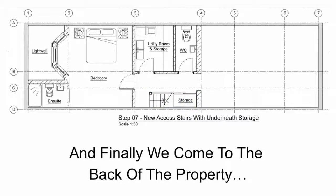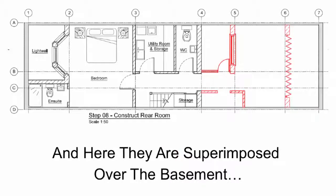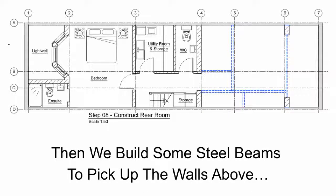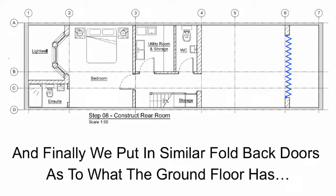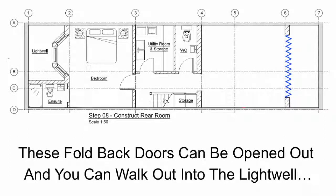Finally we come to the back of the property and here we can see what we need to support from the ground floor above, superimposed over the basement. So in step 8 we firstly build the end walls in a similar way to the ground floor, then build some steel beams to pick up the walls above, and finally put in similar folding doors to what the ground floor has. These folding doors can open up and out and you can walk out into the light well.